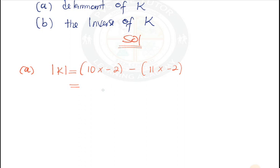So this one gives us -20 minus -22, which is -20 plus 22. So we can conclude and say the determinant of matrix K is just 2.